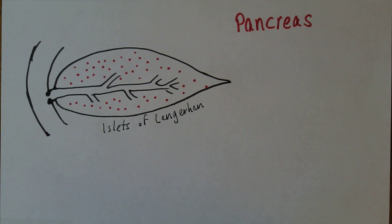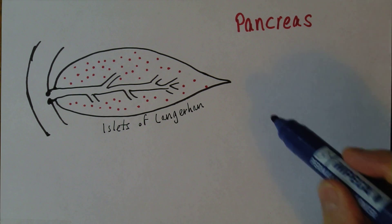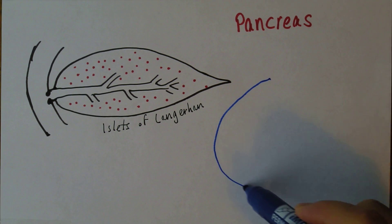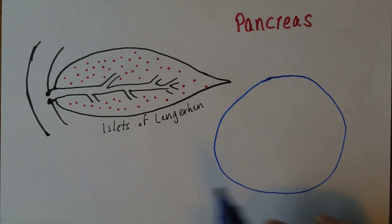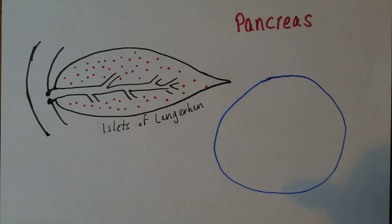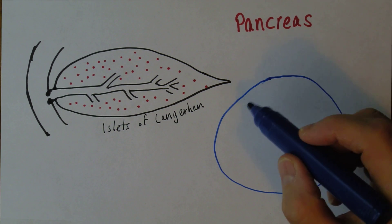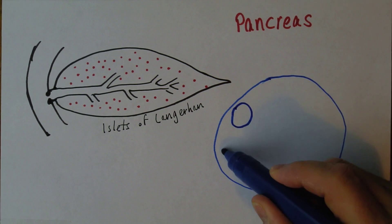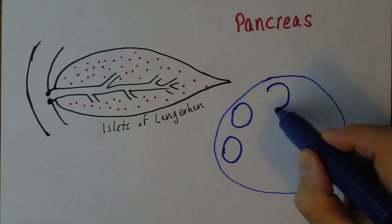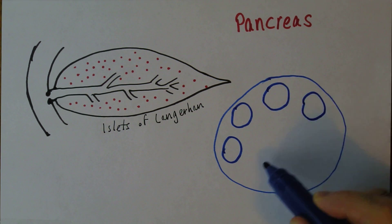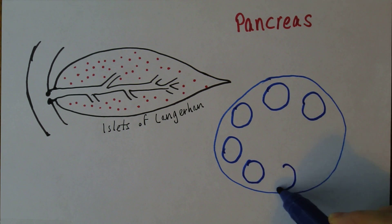Now if you look at the pancreatic islets in more detail, they're not that big. They're made out of islets of tissue, not rings—they're different shapes. On the outside, there's one type of cell. When you look at it in the microscope, you can't really tell the difference, but histologically this is the case.